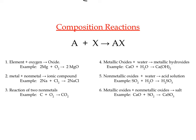They all follow the same format: A plus X yields AX. A and X can be elements or compounds on the reactant side, and on the product side there is only going to be one compound. So we have two things coming together to make a compound. Below, I have six very common situations that you could be in for composition reactions.